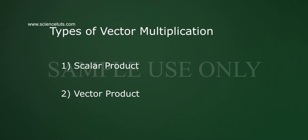Multiplication of vector. Types of vector multiplication: 1. Scalar product, 2. Vector product.